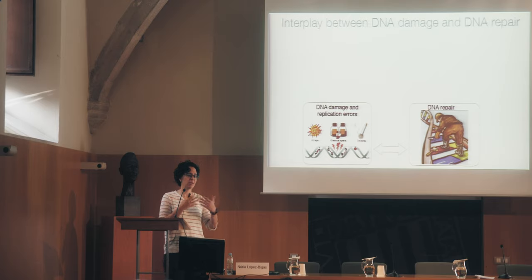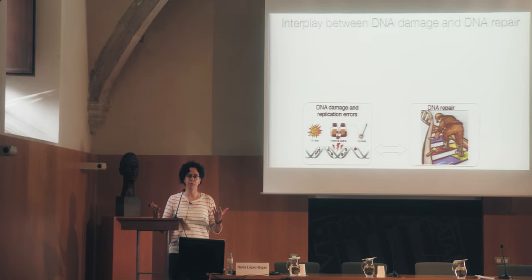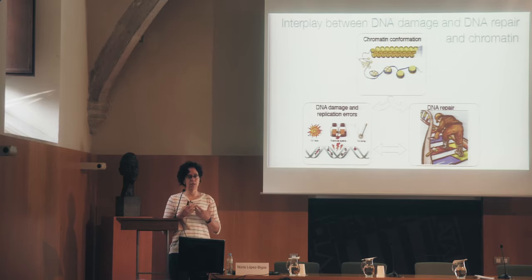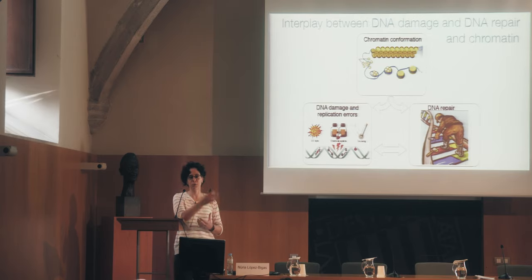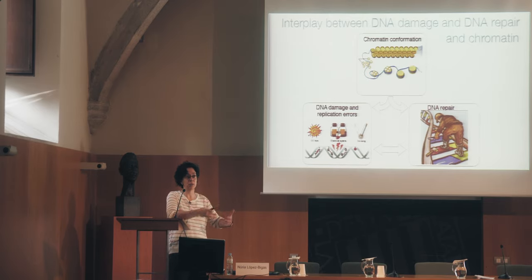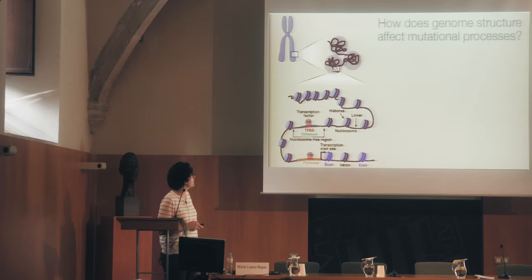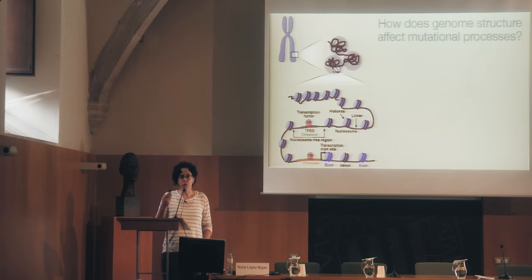The mutations, the type of mutations, and the distribution along the genome are a result of the interplay between DNA damaging happening along the genome and the accessibility or activity of DNA repair. All this has an effect of the chromatin conformation — there are some regions that are more open or closed. We have nucleosomes, we have transcription factors. All this influences both how the damage may be distributed along the genome, how DNA repair may be active, and ultimately the distribution of mutations. The question we have asked in the lab is: how does genome structure influence the rate of mutation?